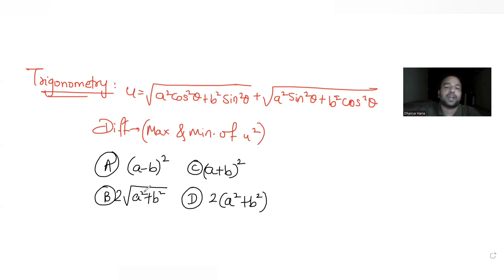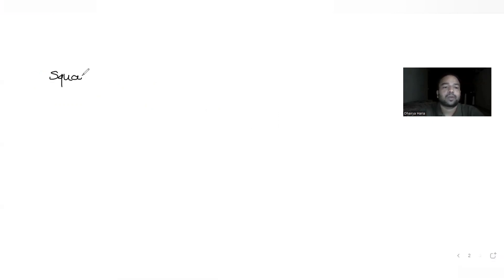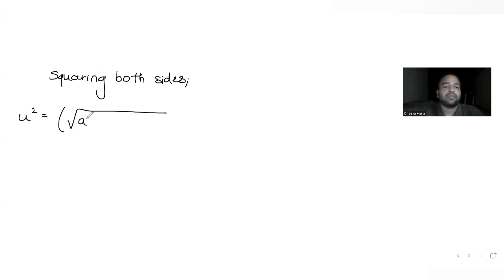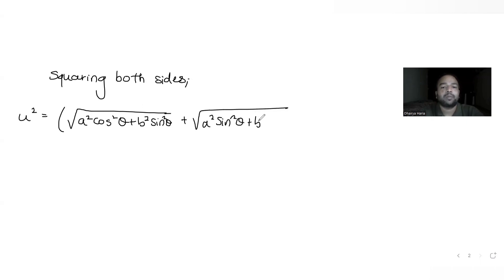We need to figure out which of them is the correct answer for the difference between maximum and minimum value of u square. So let's square this u — squaring both sides, I get u square is equal to the square of: root of (a square cos square theta plus b square sin square theta) plus root of (a square sin square theta plus b square cos square theta). So you have (a plus b) the whole square.